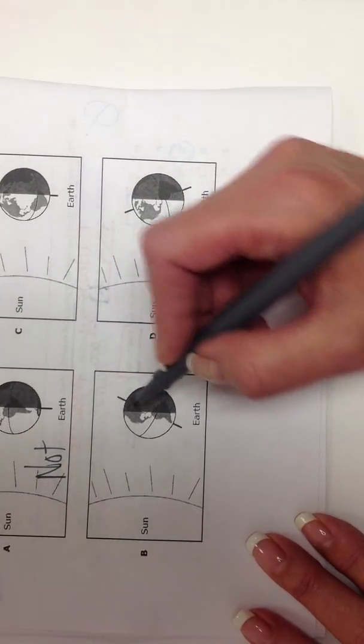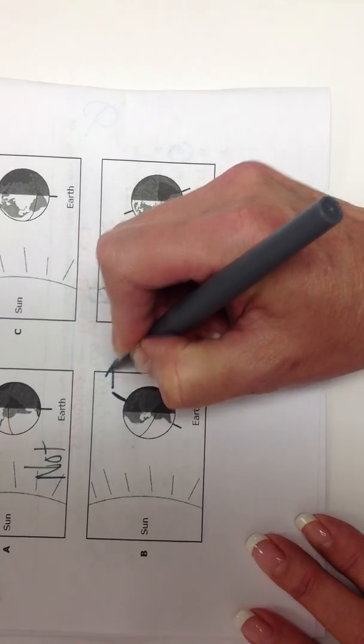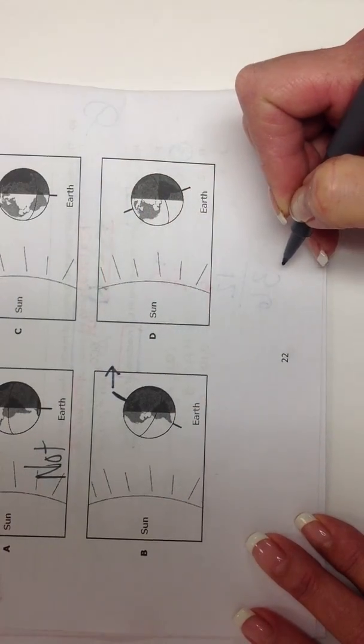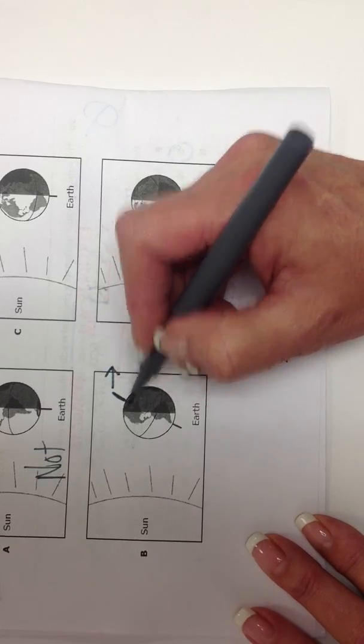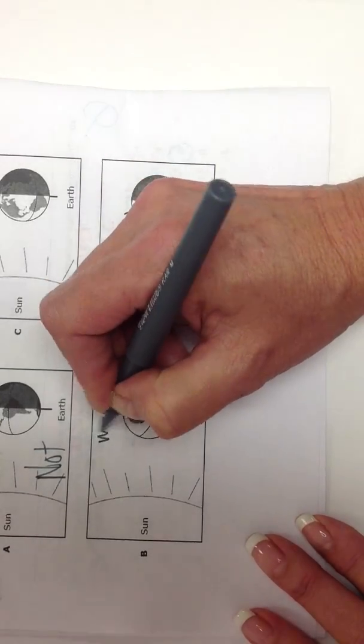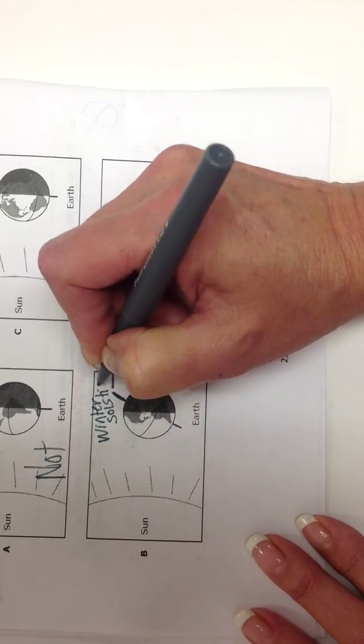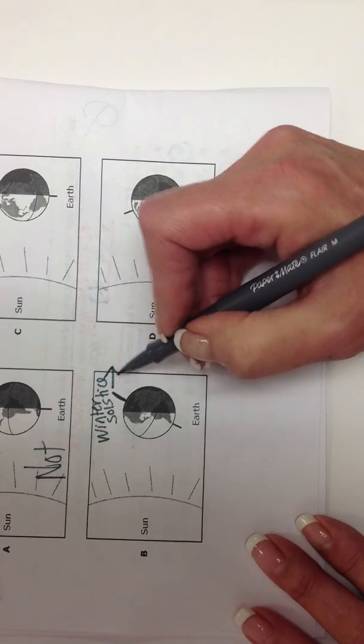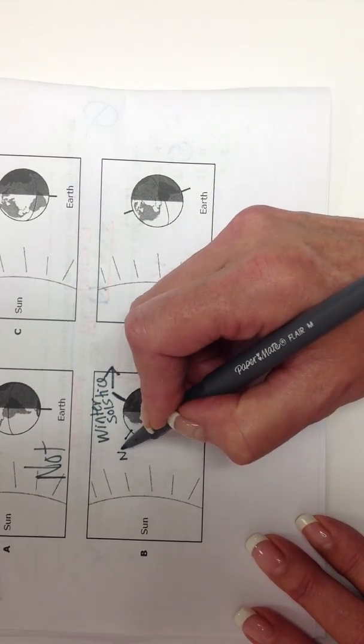Alright, here we see that the north pole is tilted away from the sun. That means, and if you look at the north pole, you can see that all this area is not getting any sun at all because it is the winter solstice. Meaning that if we're having winter in the northern hemisphere, right, this is the northern hemisphere.